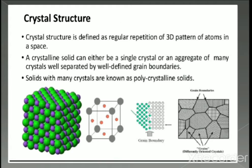Crystal structure is defined as the regular repetition of a three-dimensional pattern of atoms in space. Crystalline solids can either be a single crystal or an aggregate of many crystals separated by well-defined grain boundaries. Solids with many crystals are known as polycrystalline solids. The images show the structure of a crystalline lattice in a three-dimensional pattern.